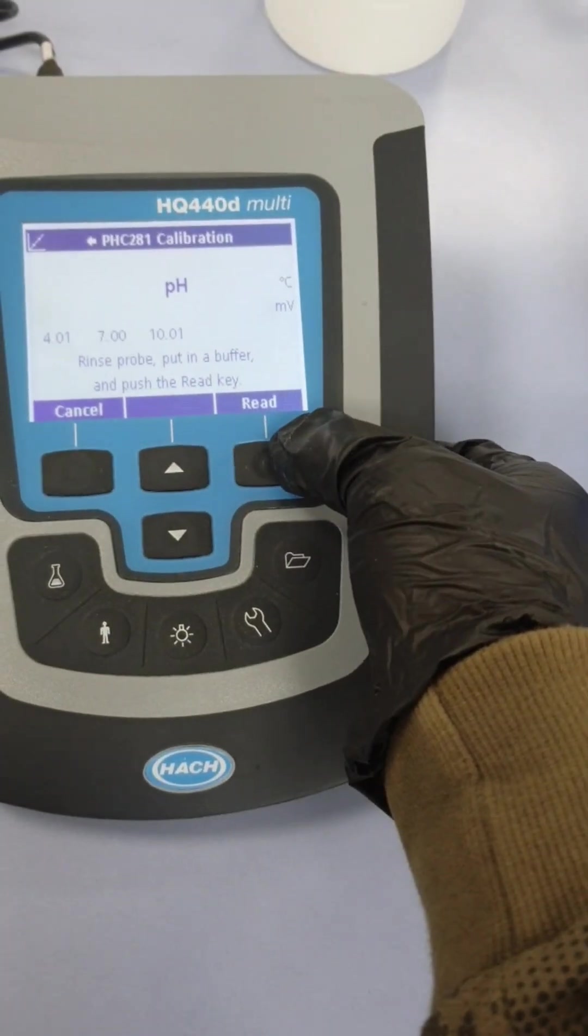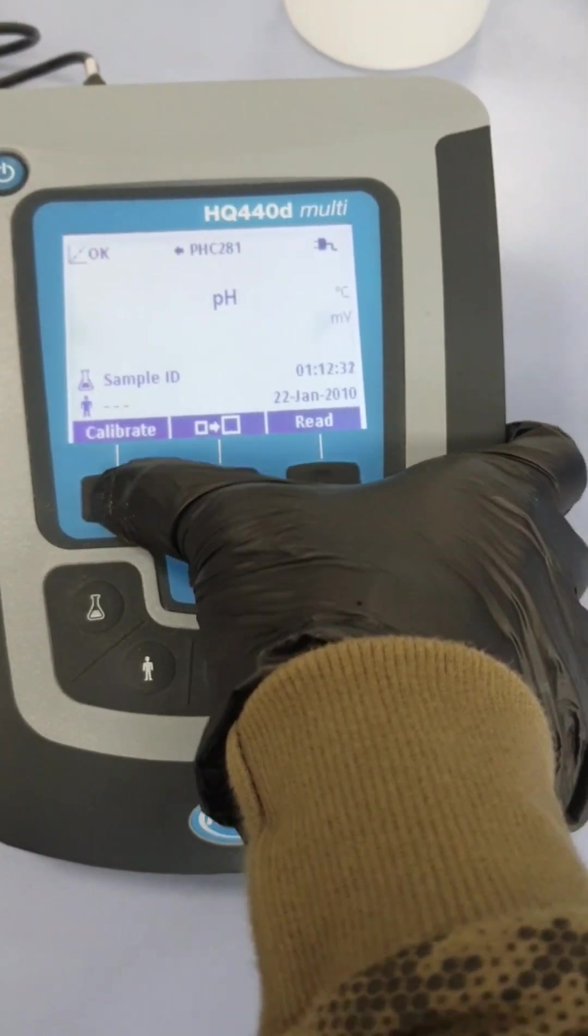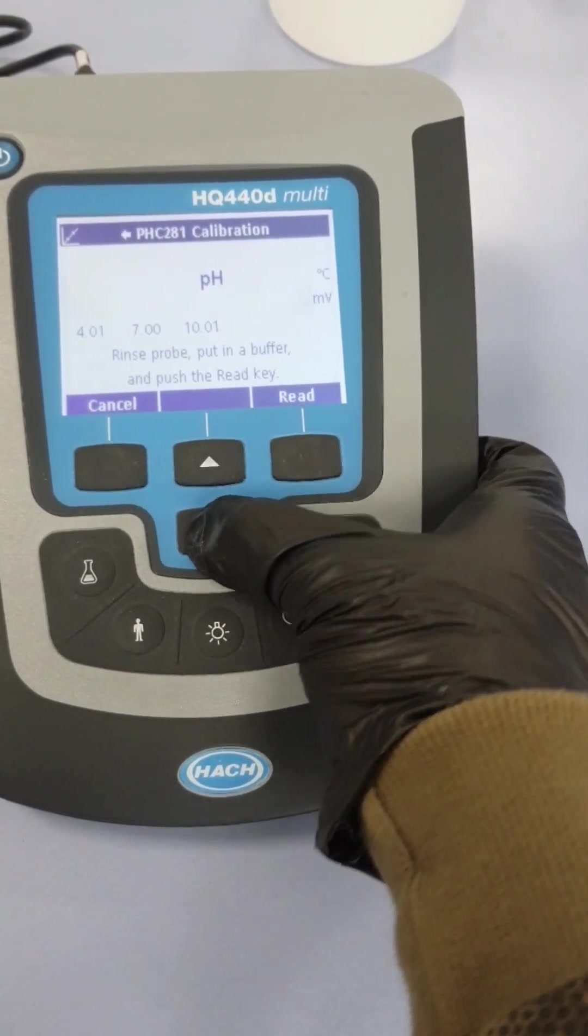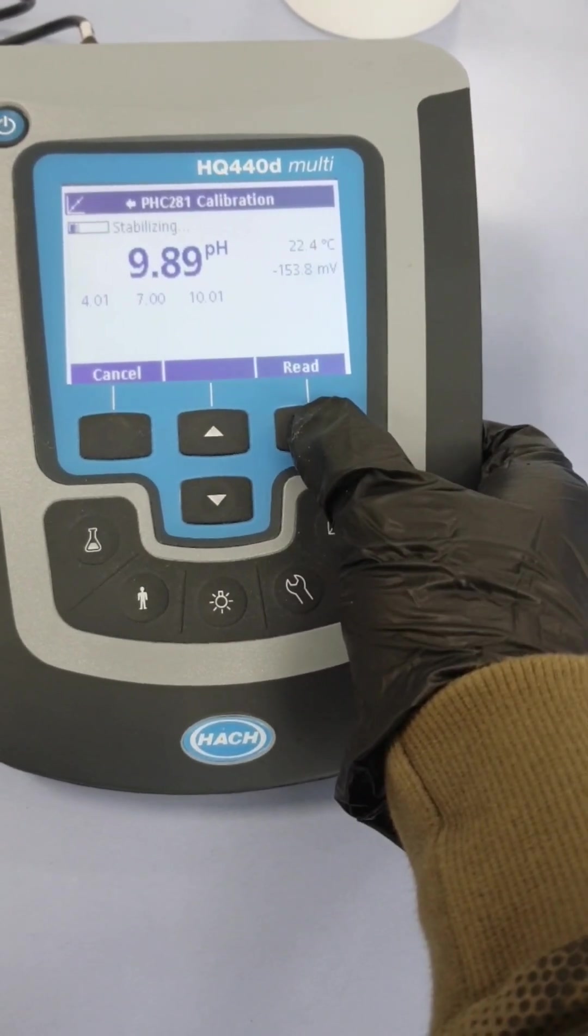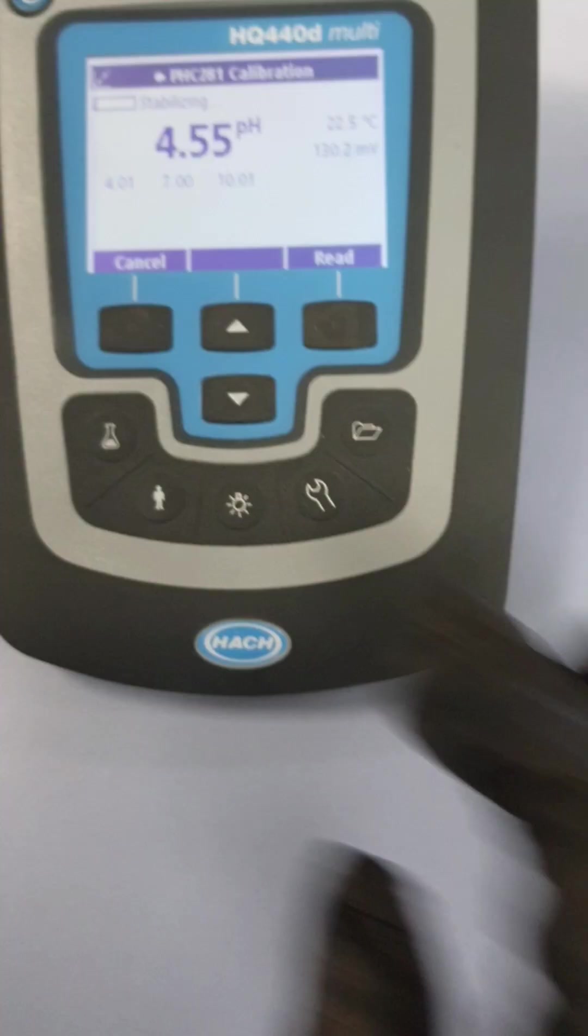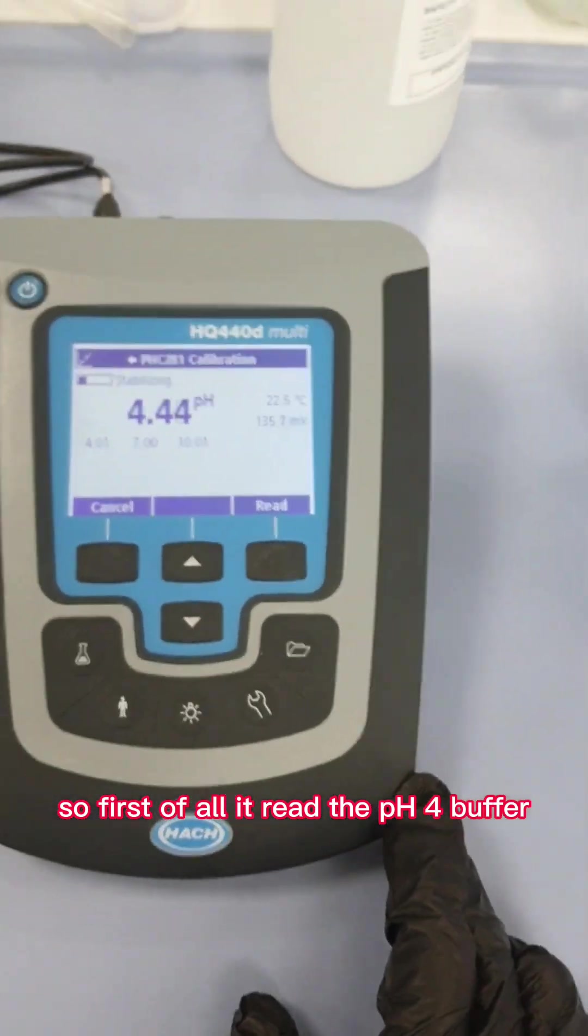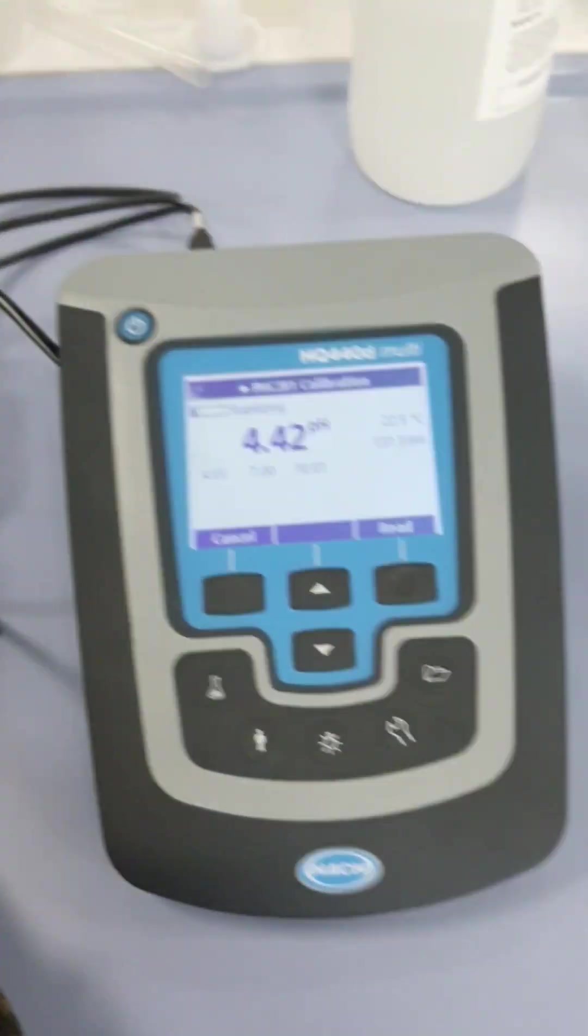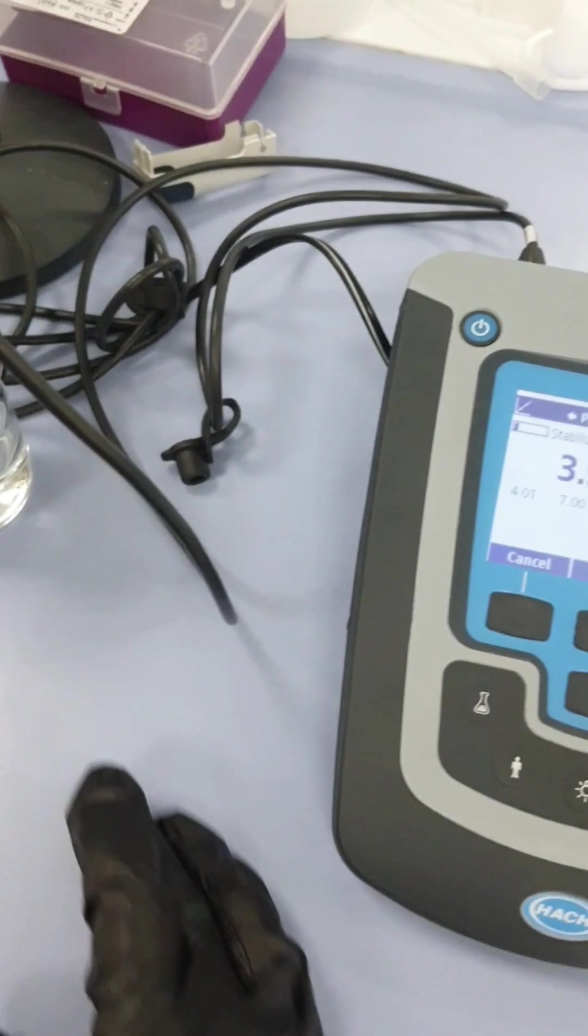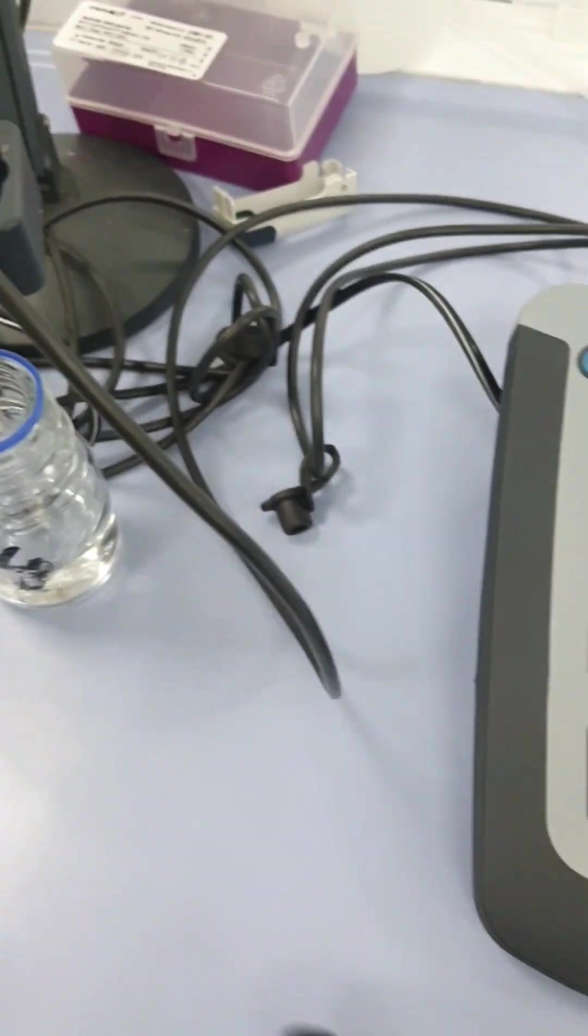Now we're going to say read. So now what we are going to do, we are going to say read. First of all, it will read the pH 4 buffer. You can see here. We also need to shake our solution. The ideal way is to add a bead and a stirrer and then shake our solution, and then read.